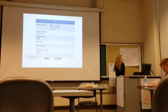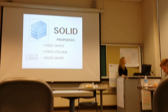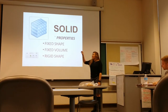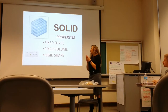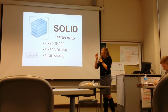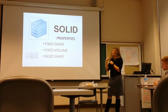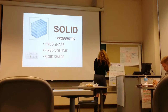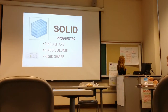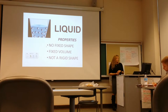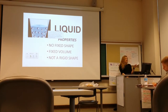Now we're going to talk about the different properties of these different states of matter. First, the solid: their molecules are very compact, so they vibrate but don't move around. The properties are they have a fixed shape, a fixed volume, and a rigid shape. Then the liquid: it has no fixed shape but a fixed volume, and the particles kind of move around and bounce off each other.